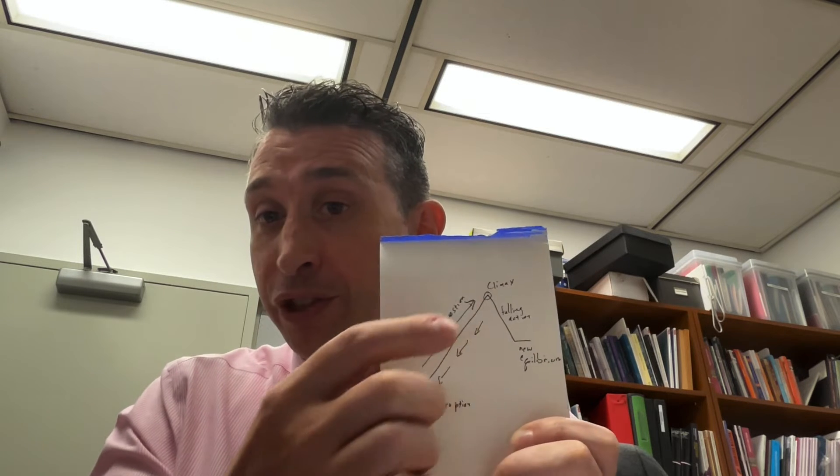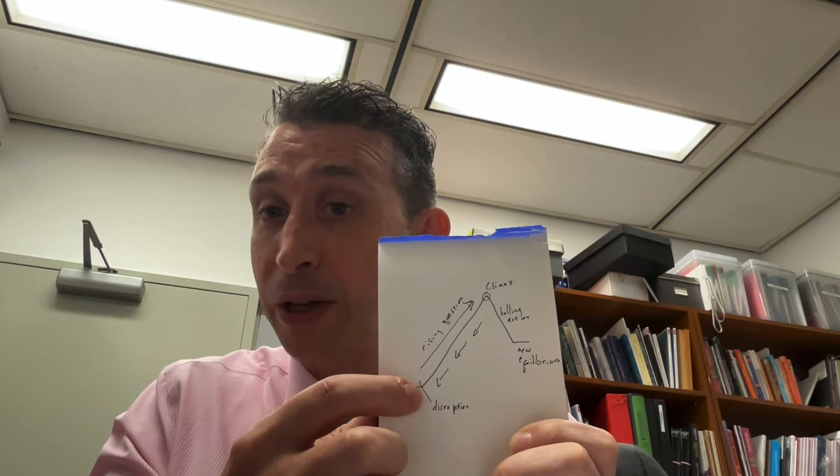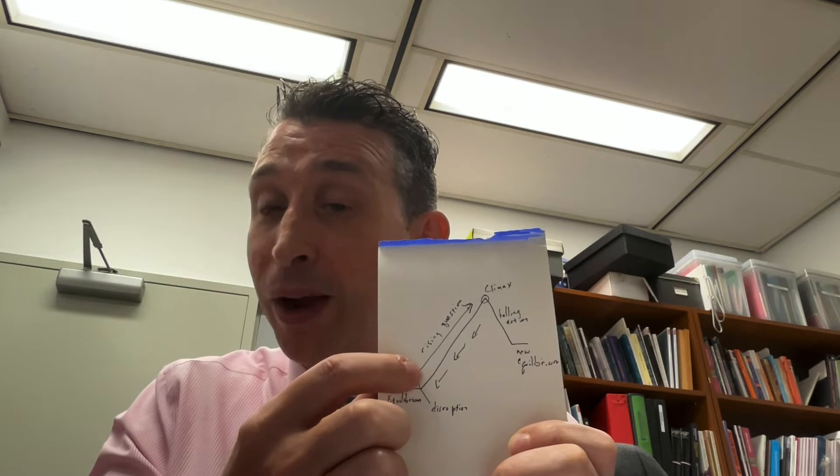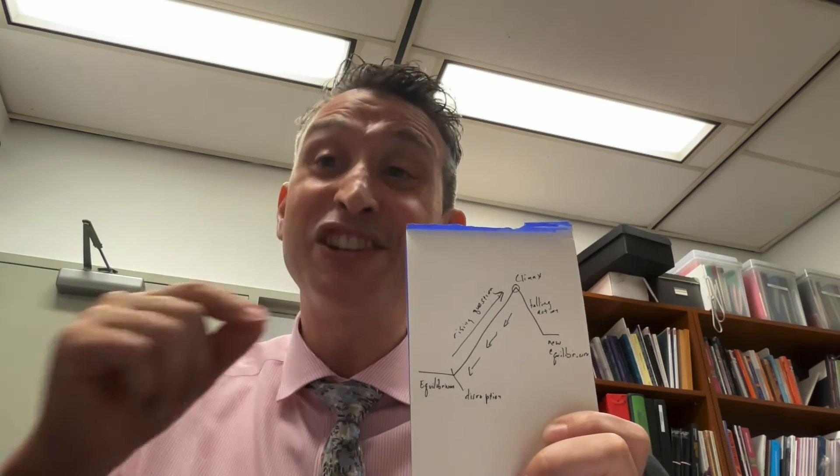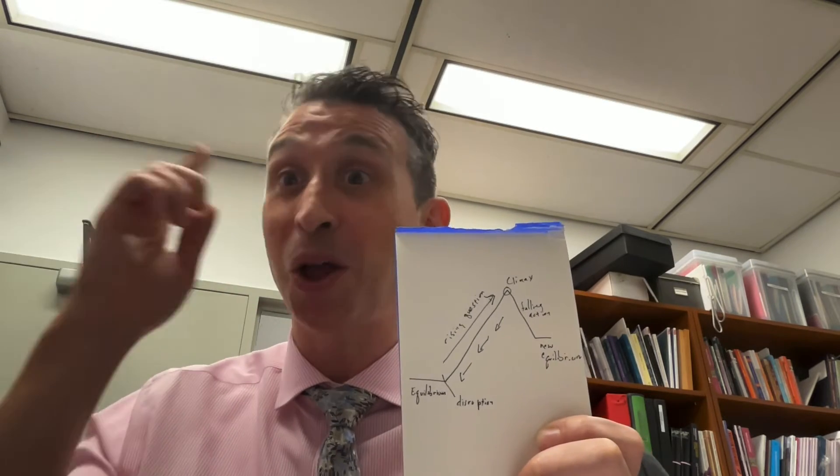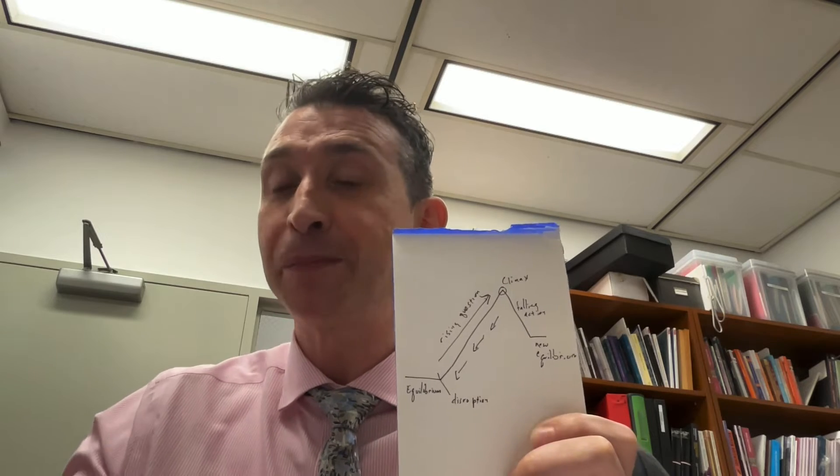And remember, the disruption should create the rising question. So the climax is when we know the answer to the rising question. So if the disruption is the prince announcing the ball, and our rising question is, will Cinderella marry the prince when the shoe fits? Yes. The answer is yes. She will marry the prince. That is our climax. And a lot of times in stories, we don't necessarily know what the rising question is as readers until we reach the climax. And then we're like, oh, okay, that's what the story was about.